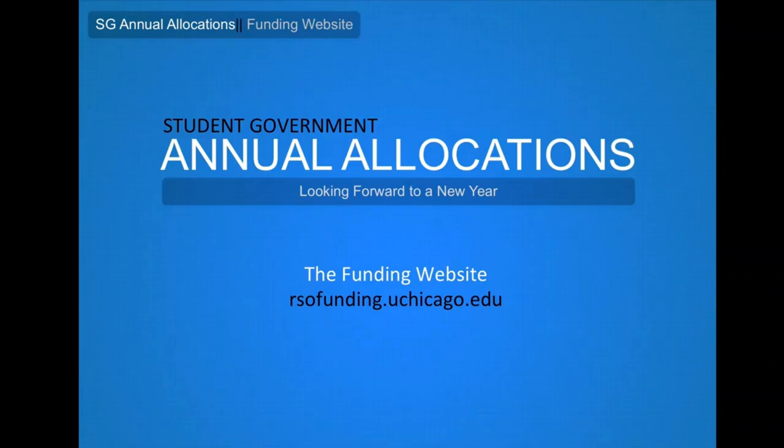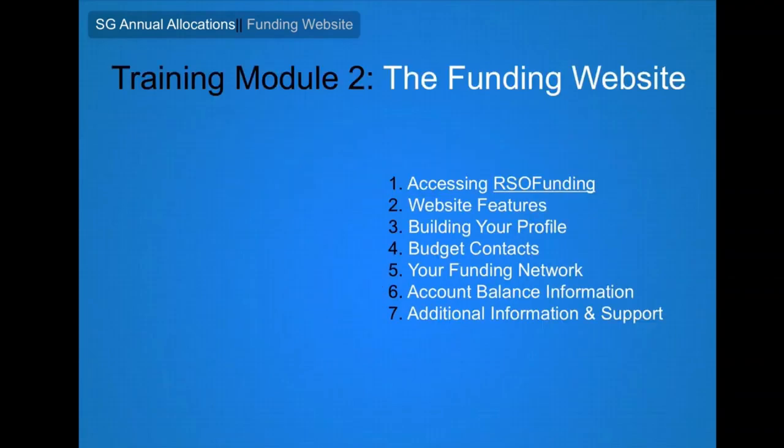Welcome to the second training module for student government's annual allocations. This module will focus on the funding website, including how to access the website and register your budget team, the features and resources available on the website, and how to build your RSO's profile, including your contacts, information about your funding network, and your account balance.